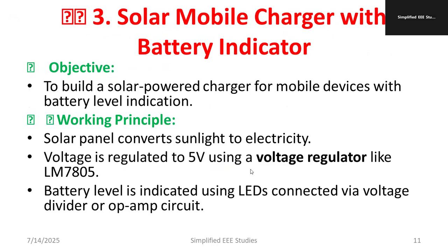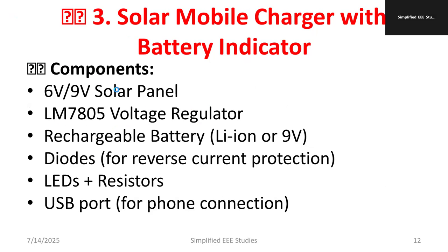The next project is a Solar Mobile Charger with Battery Indicator. The idea is to build a solar-powered charger for mobile devices with battery level indication. The solar panel converts sunlight into electricity — it acts as a transducer. The voltage is regulated to 5 volts using the LM7805 regulator, and the battery level is indicated using LEDs connected via a voltage divider.